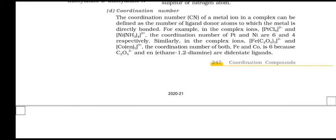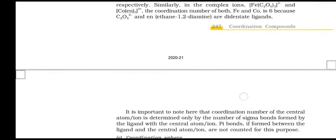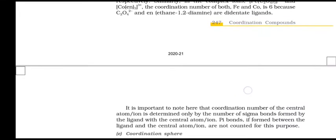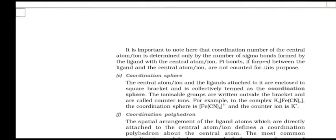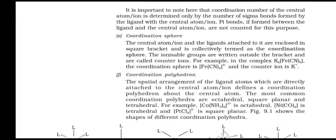For example, in the complex ions [PtCl6]2- and [Ni(NH3)4]2+, the coordination numbers of Pt and Ni are 6 and 4 respectively. In the complex ion [Fe(C2O4)3]3-, C2O42- and en are didentate ligands. It is important to note that the coordination number of the central atom or ion is determined only by the number of sigma bonds formed by the ligand with the central atom. Pi bonds, if formed between the ligand and the central atom, are not counted for this purpose.